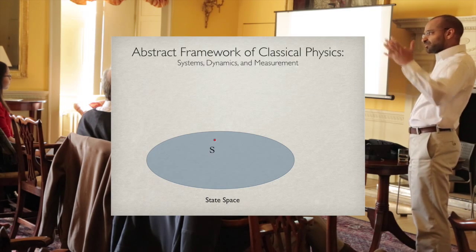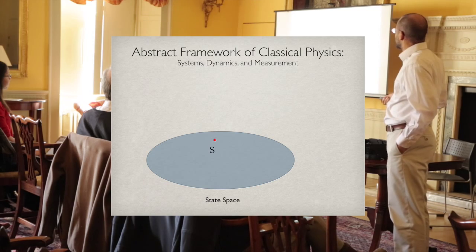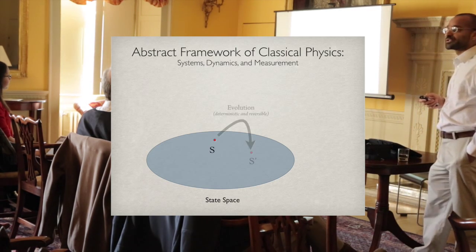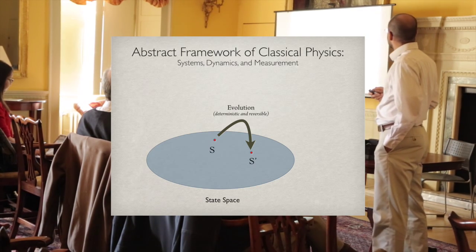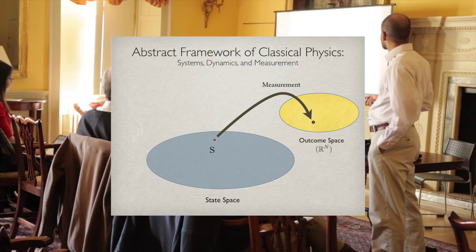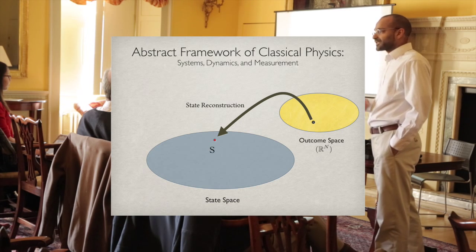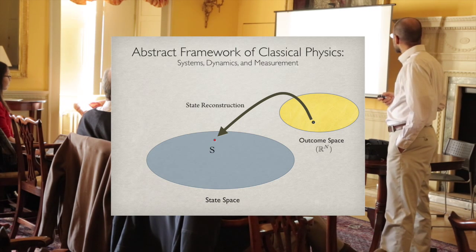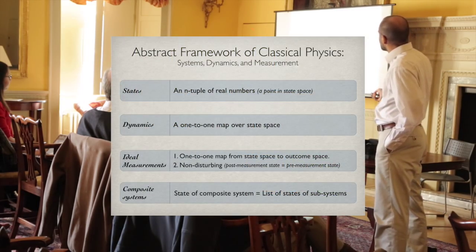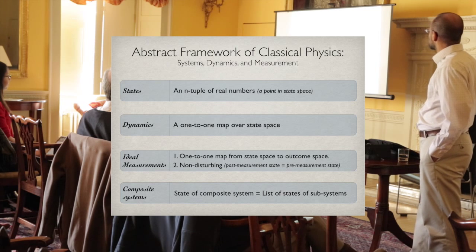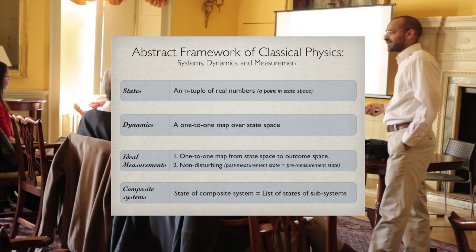Abstractly, we could say what is the abstract framework within which we build classical physical theories? We have a state space. Dynamics are represented by one-to-one maps over state space, which are reversible. There exist measurements to learn about these states, and in principle, there are measurements which tell us exactly what the state of the system is. These measurements are non-disturbing, ideally.